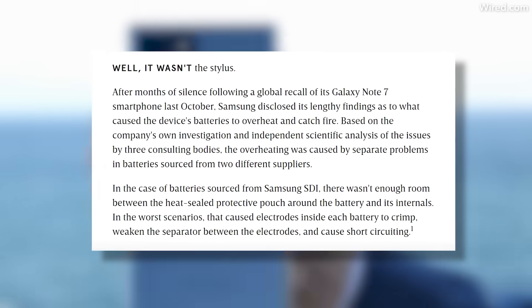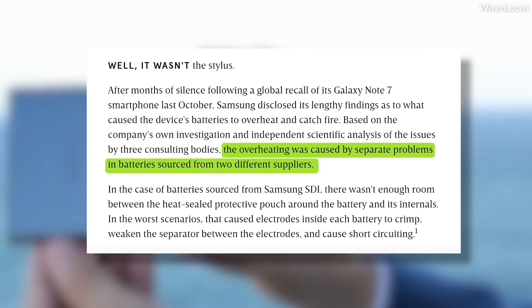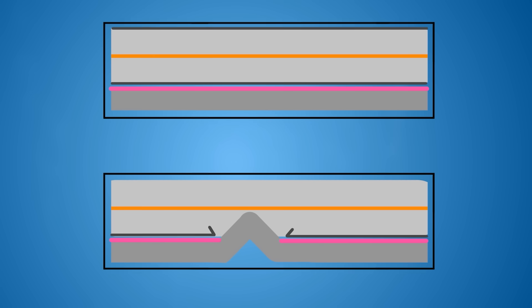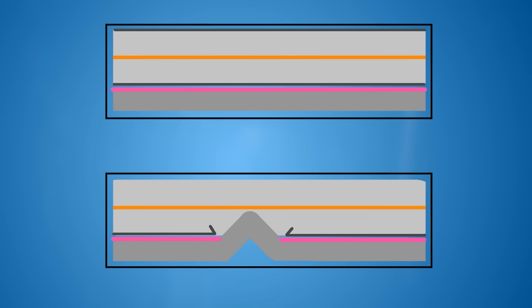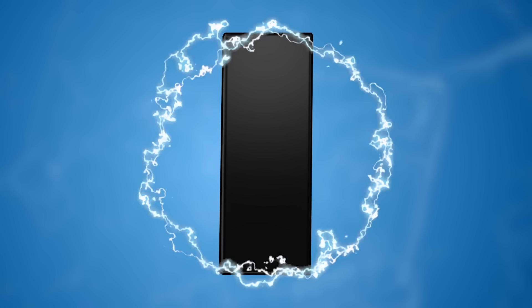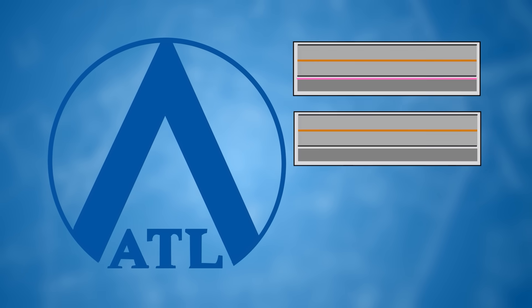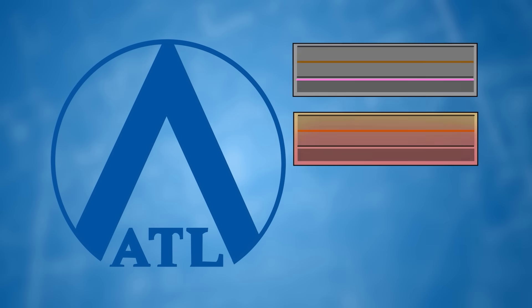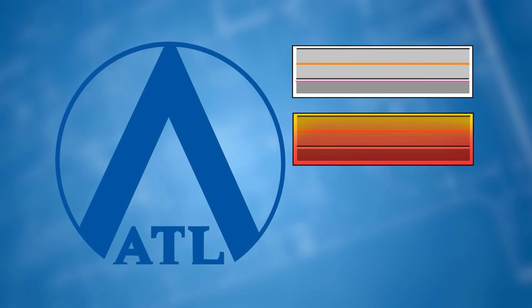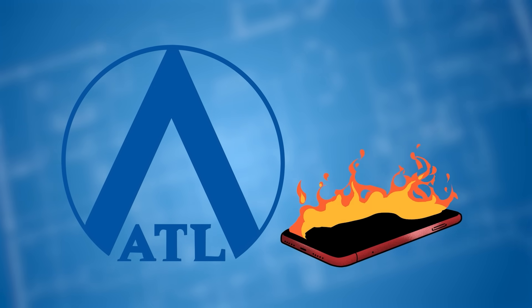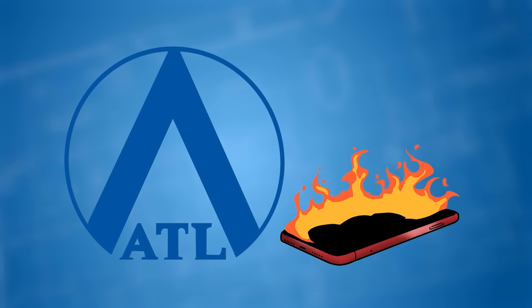According to Wired, the exploding phone issue was due to compounding problems from two different battery suppliers. Batteries sourced by Samsung SDI did not have enough room between a heat-sealed pouch around the battery and its internal parts. This defect made it easier for the battery to short-circuit, potentially causing a fire. Other batteries sourced by Amperex Technology Limited were missing key insulation tape which could keep the heat down, and some of the cells inside the battery had sharp edges that could puncture the wall between the two sides, again increasing the risk of short-circuiting and bursting into flames.